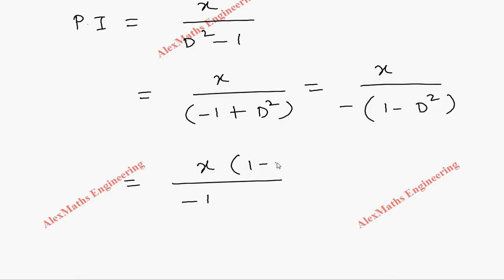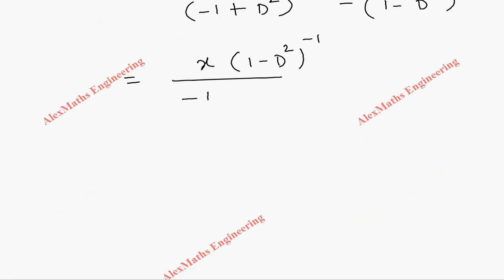This becomes the numerator as (1 - D²)^(-1). We have to expand using the formula (1 - x)^(-1) = 1 + x + x² + x³ + ... and so on.